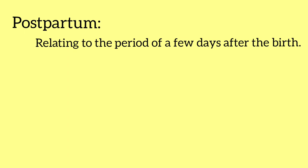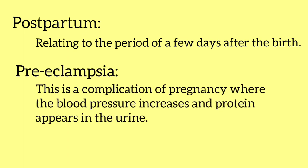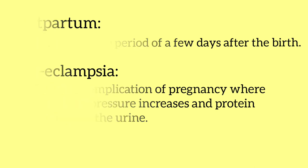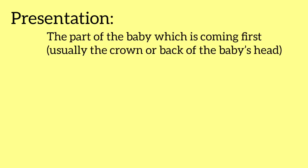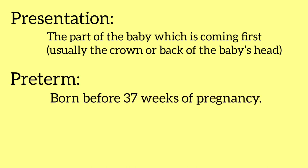Postpartum relates to the period of a few days after the birth. Preeclampsia is a complication of pregnancy where blood pressure increases and protein appears in the urine. Presentation is the part of the baby coming first, usually the crown or back of the baby's head. Preterm means born before 37 weeks of pregnancy.